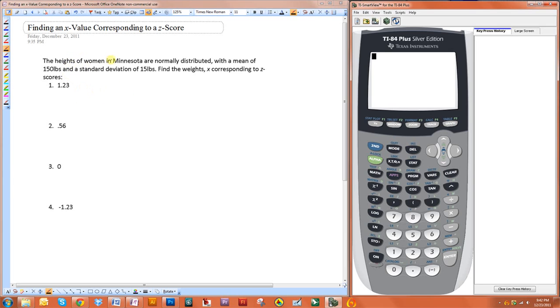In this example, heights of Minnesota women are normally distributed with a mean of 150 pounds and a standard deviation of 15. We want to find the weights corresponding to the following z-scores.